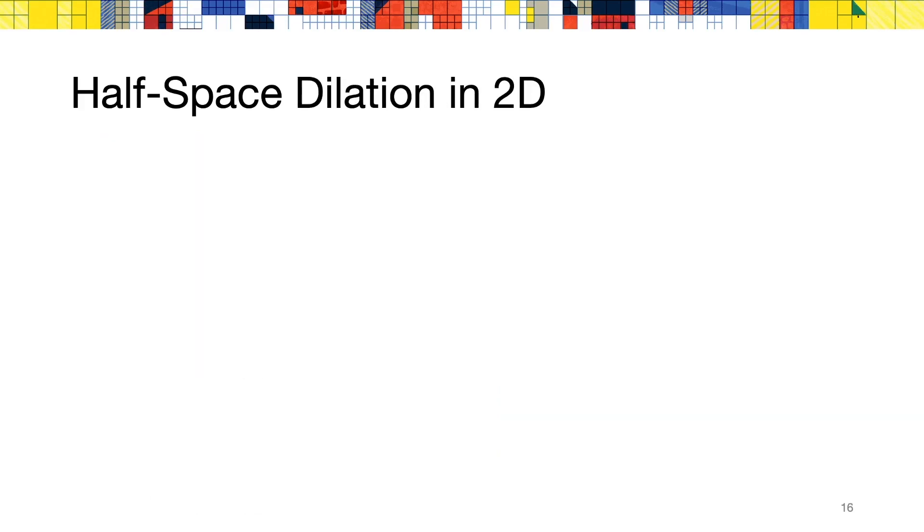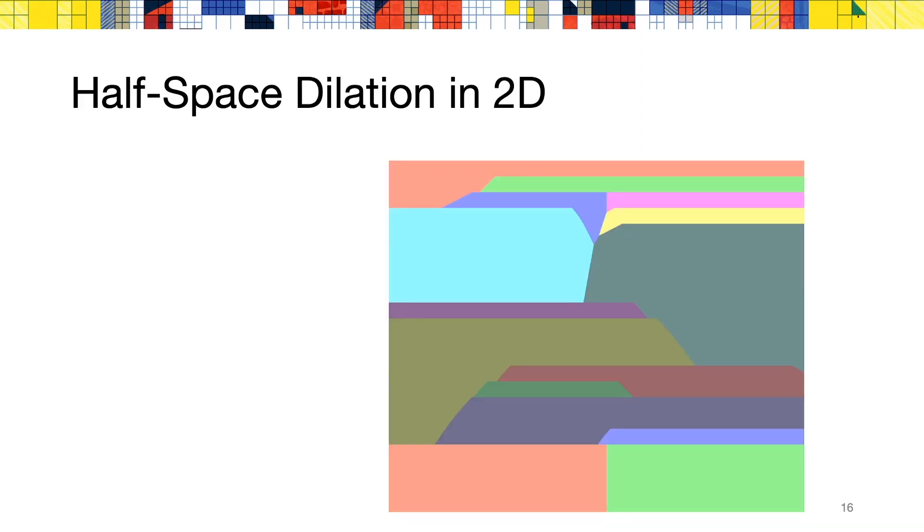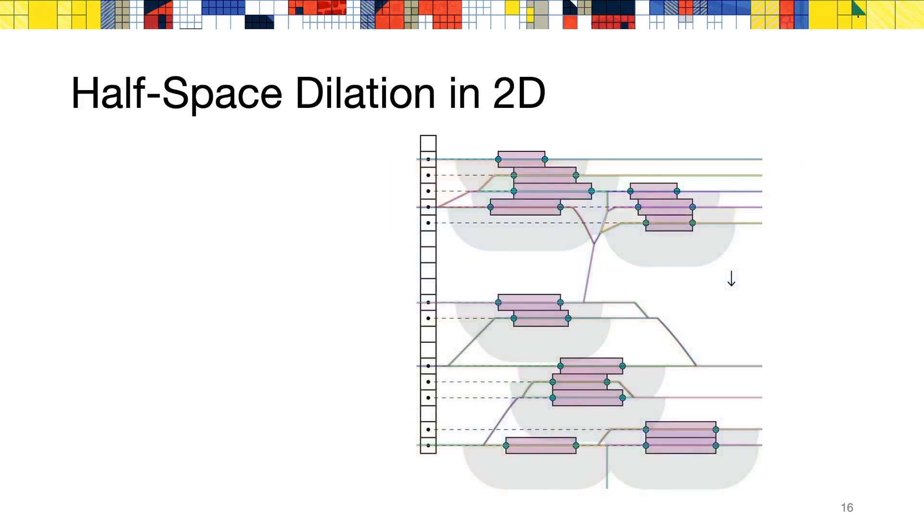Now, to compute the result of a dilation from a set of input segments, we use a sweep line approach and separate both the forward and backward offsets into two separate sweeps. Given the forward Voronoi diagram of the input segments, we advance a sweep line along the y-axis and use an implicit representation of the forward Voronoi diagram to compute the dilated arrays on the current sweep line.